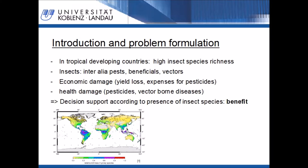According to the mentioned impacts of some of the insect species, it would be a benefit for human beings if they would know which insect species are located in the near area and what are probable countermeasures. Countermeasures tailored to the personal characteristics of a user or the location he is living in would be a great benefit for people, especially living in developing countries.